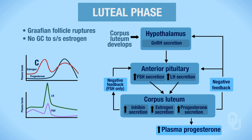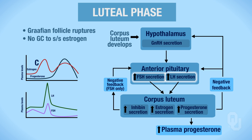Now once the corpus luteum develops — and this occurs within the luteal phase — that's going to signal the hypothalamus to synthesize and secrete gonadotropin-releasing hormone, which will target the anterior pituitary, and that's going to cause synthesis and secretion of FSH and LH. We're going to use A to represent LH on your diagram, and B to represent the increase in FSH on your diagram.